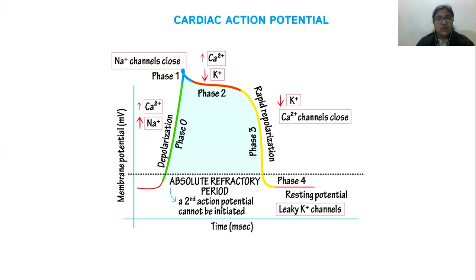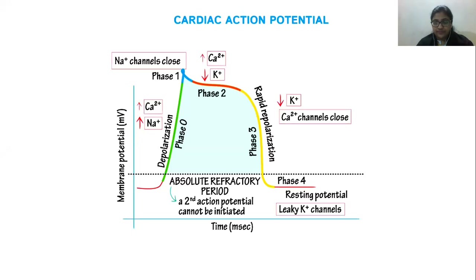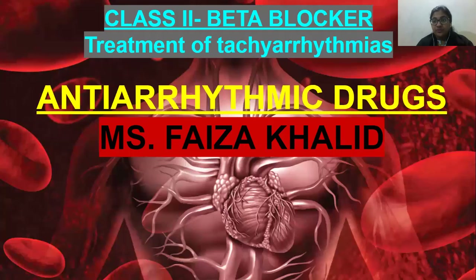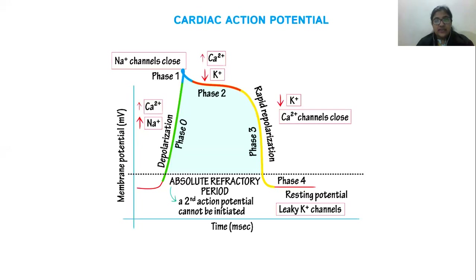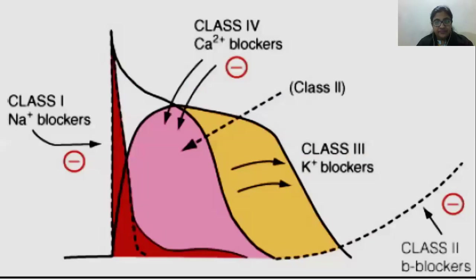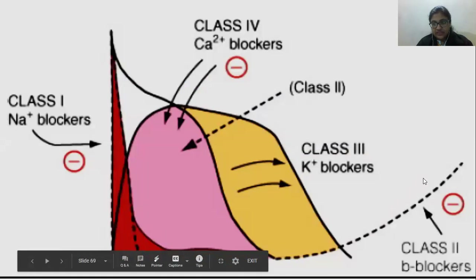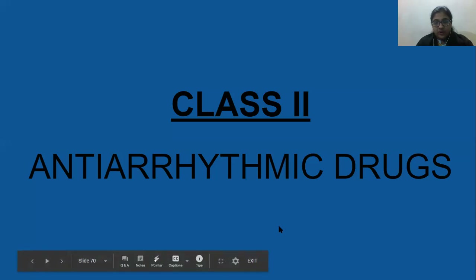Regarding the cardiac action potential: the first step is depolarization, then phase one, phase two, phase three, and then phase four. This is Class 2, and here you can see it is making a specific difference on the action potential.